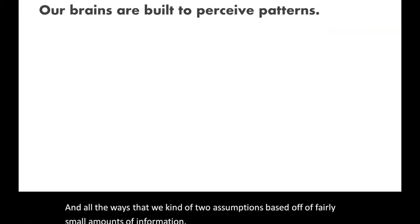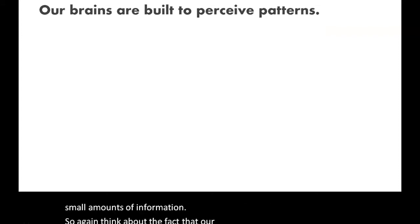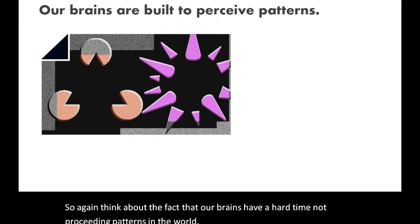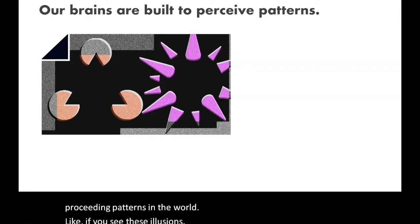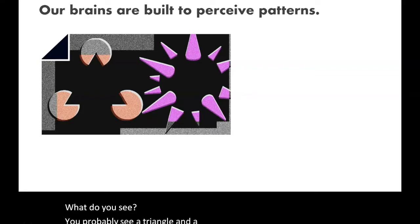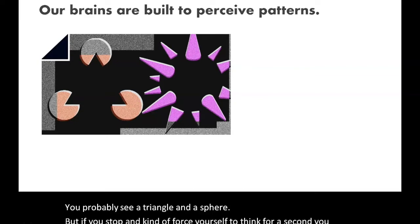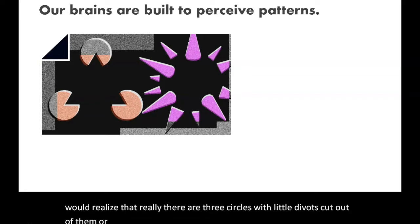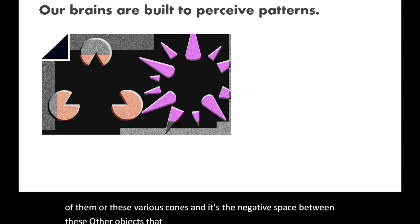Our brains have a hard time not perceiving patterns in the world. If you look at these visual illusions, you probably see a triangle and a sphere. But if you stop and think for a second, you'd realize there are really just three circles with little divots cut out of them, or various cones. It's the negative space between these other objects that we almost unavoidably perceive as itself being a solid object.